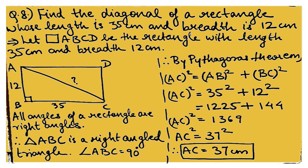Question 8: find the diagonal of a rectangle whose length is 35 centimeters and breadth is 12 centimeters. Drawing a diagonal creates a right-angled triangle. By Pythagoras: AC² = AB² + BC² = 35² + 12² = 1225 + 144 = 1369 = 37². Therefore the diagonal AC = 37 centimeters.